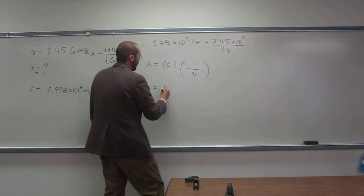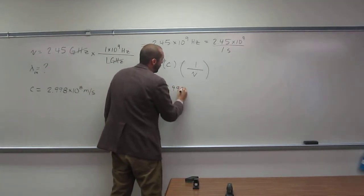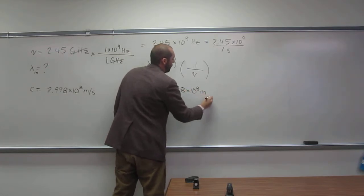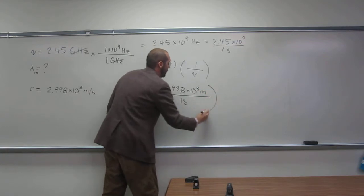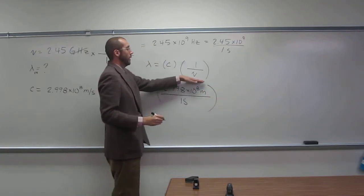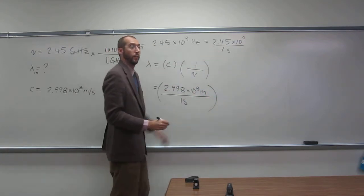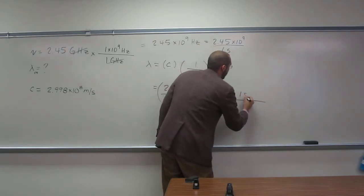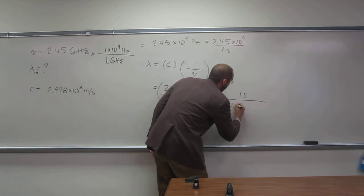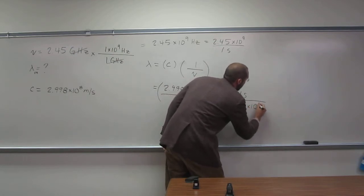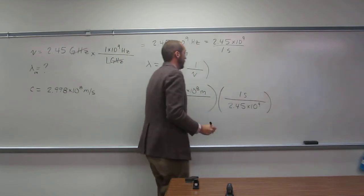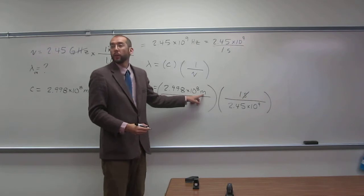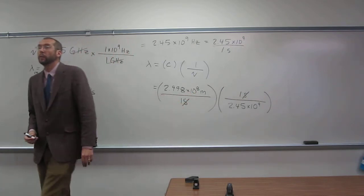So we're going to write this out: 2.998 times 10 to the 8th meters per one second. And this is the inverse of that, okay, so it's going to be 1 second divided by 2.45 times 10 to the 9th. Seconds cancel, and we're left with units of meters.